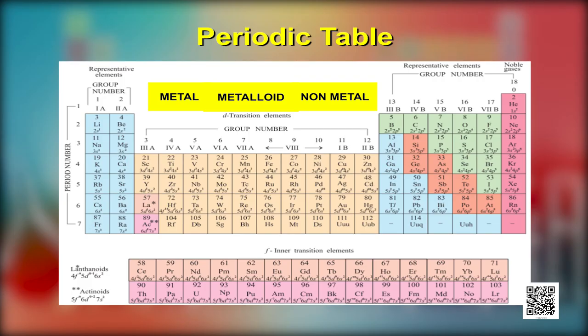By now we know that the long form of periodic table is based upon the modern periodic law and the elements are arranged in the order of their increasing atomic number. There are 18 groups and 7 periods in the periodic table. There are many observable patterns in the physical and chemical properties of elements as we descend in a group or move across a period. The real meaning of the word 'periodic' is that when elements are arranged in order of increasing atomic numbers, in the same period or group, there is a gradual change in a particular property.